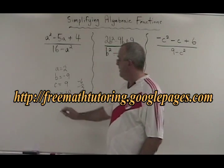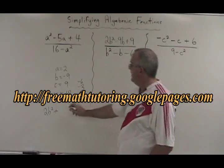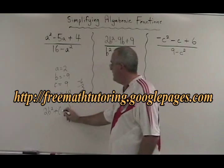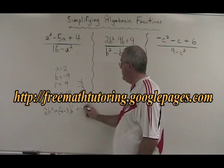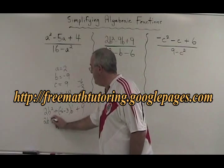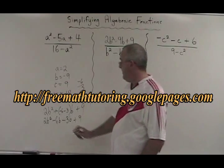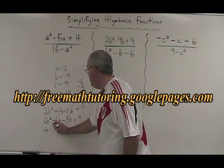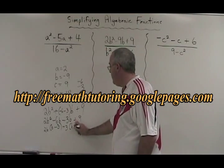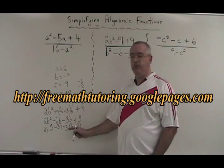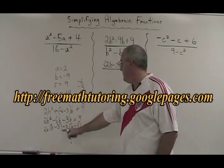We rewrite our trinomial: 2B squared plus bracket, writing negative 6 minus 3 inside the bracket, plus 9B plus 9. Rewriting: 2B squared minus 6B minus 3B plus 9. During the grouping, common factor 2B gives B minus 3, common factor negative 3 gives B minus 3. The result of our factoring of the complex trinomial is 2B minus 3 times B minus 3 in the numerator.